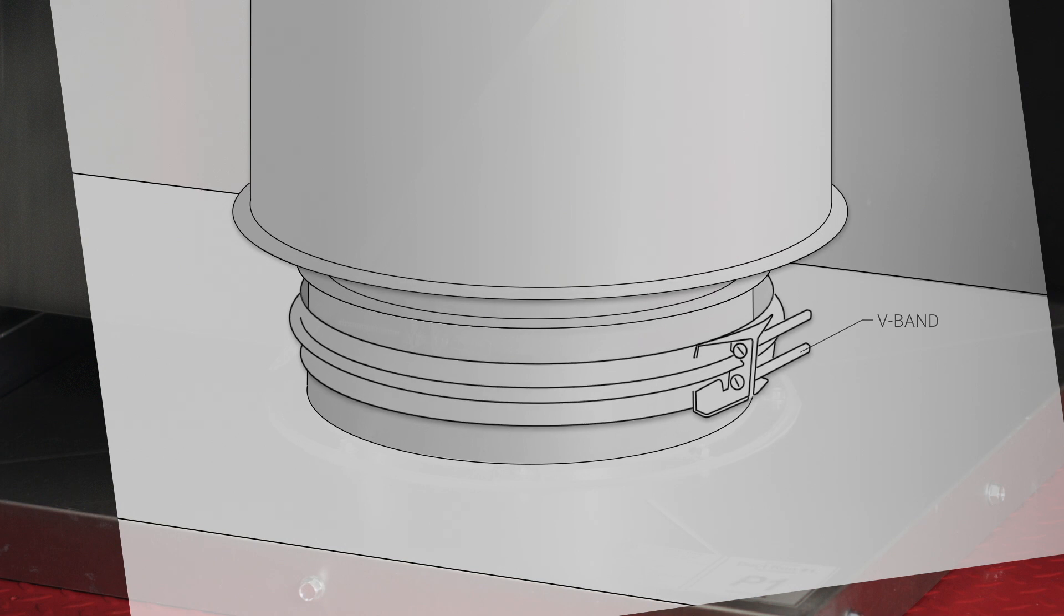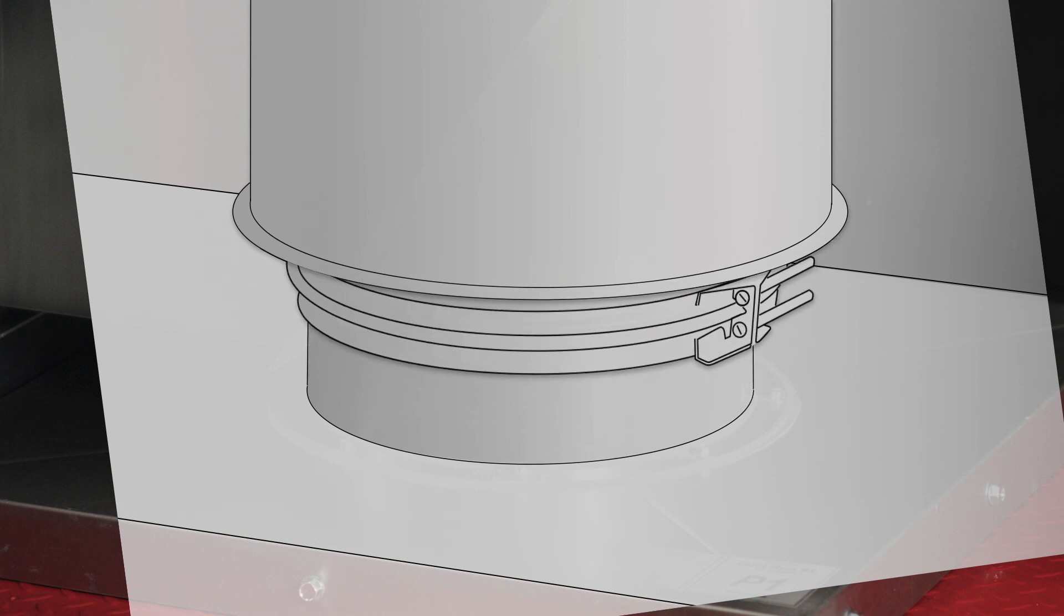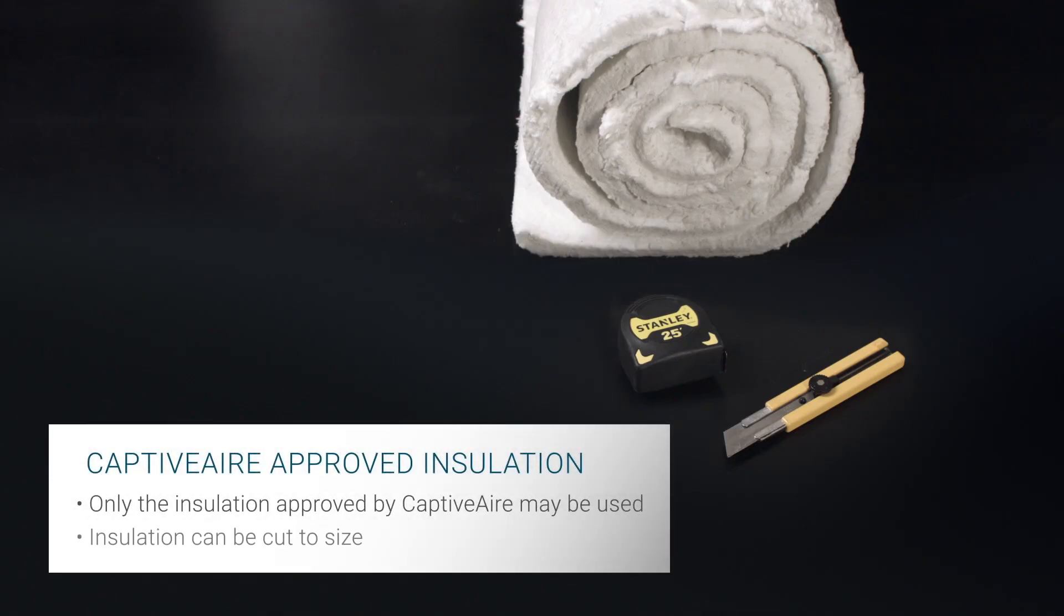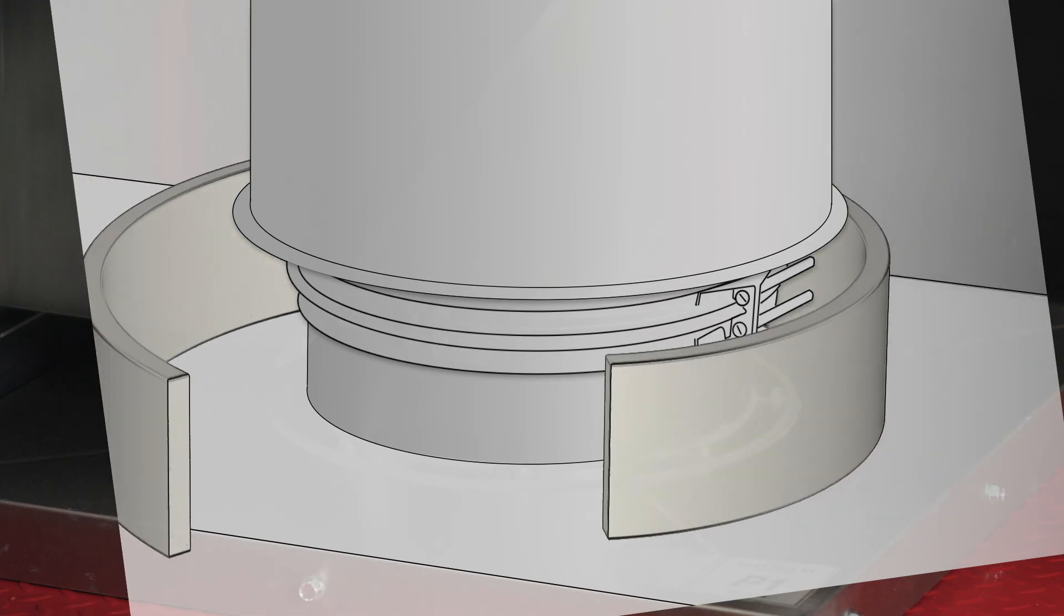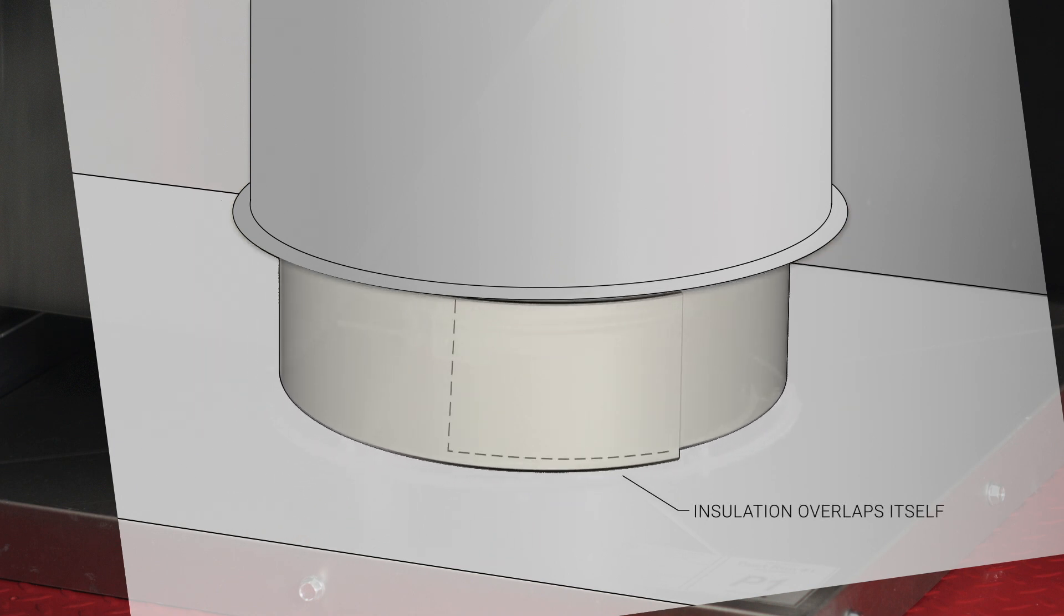Once the riser and connecting duct sections have been connected, cut the provided insulation to size. Tightly wrap the insulation to completely fill all voids. Be sure that the remaining ends overlap, and that the insulation is the same type and number of layers as the rest of the duct.